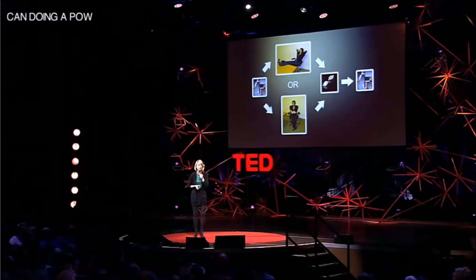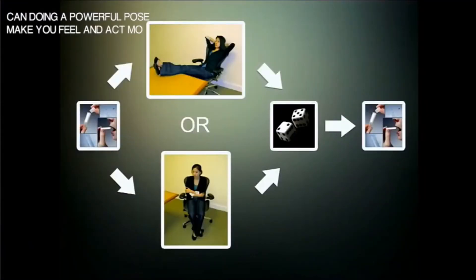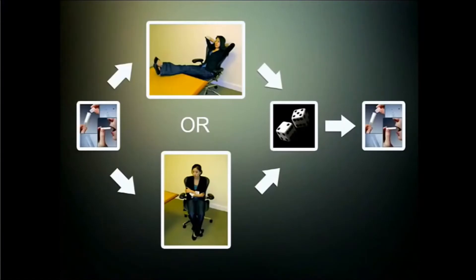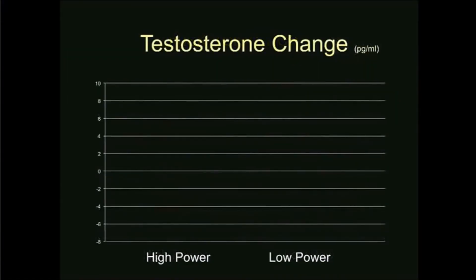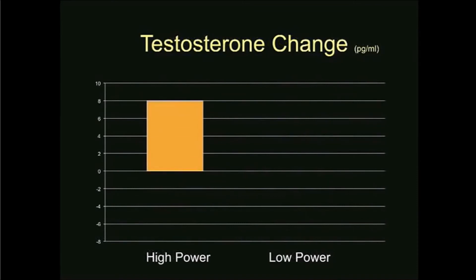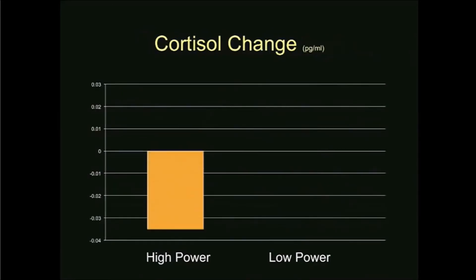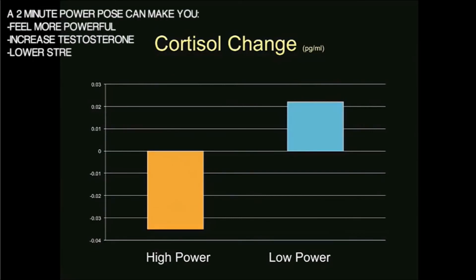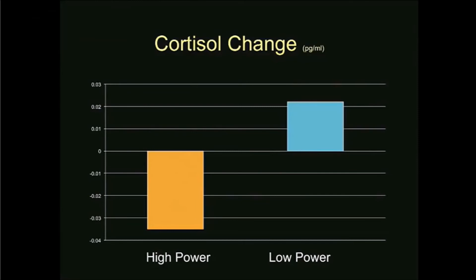Participants came in and spat into a vial. For two minutes they held a pose, then were asked how powerful they felt. Another saliva sample was taken. On testosterone: high-power people experienced about a 20% increase and low-power people about a 10% decrease. On cortisol: high-power people experienced about a 25% decrease and low-power people about a 15% increase. So two minutes led to hormonal changes that configure your brain to be either assertive, confident, and comfortable — or really stress reactive.